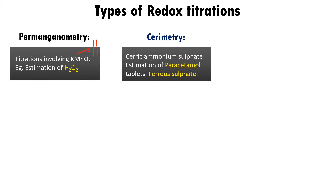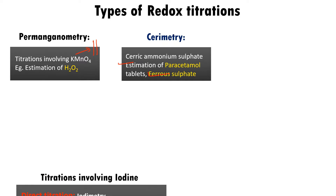Next, we have cerimetry. Ceric ammonium sulfate is used in the burette as a titrant. It is used in estimation of paracetamol and ferrous sulfate.